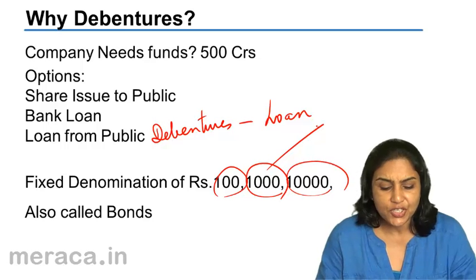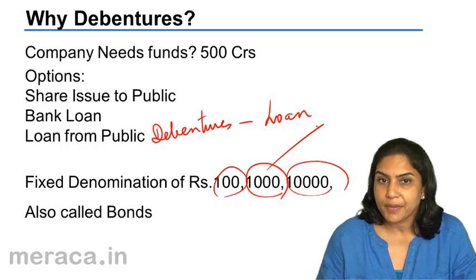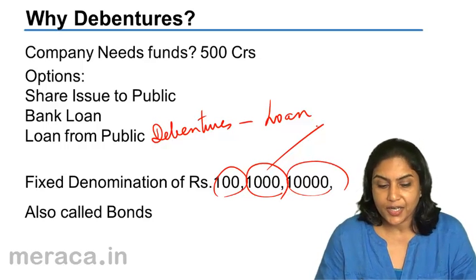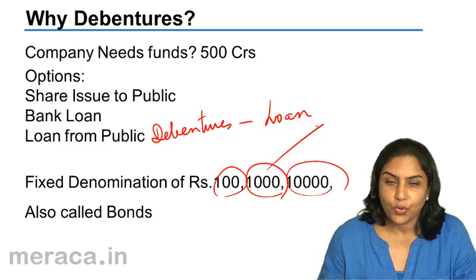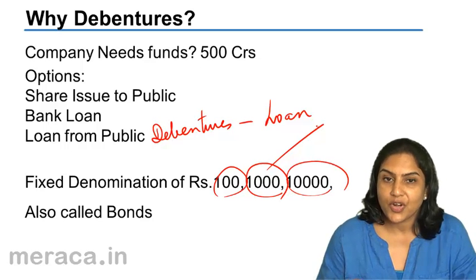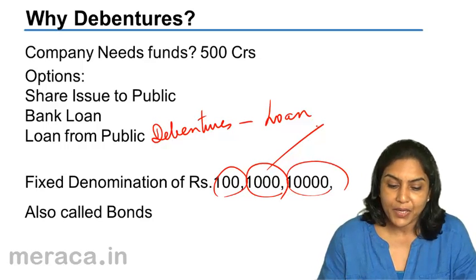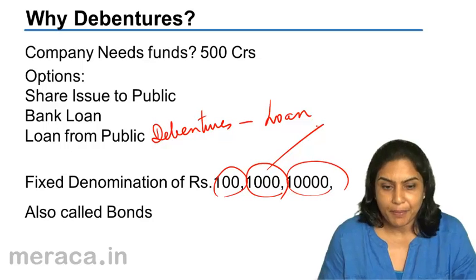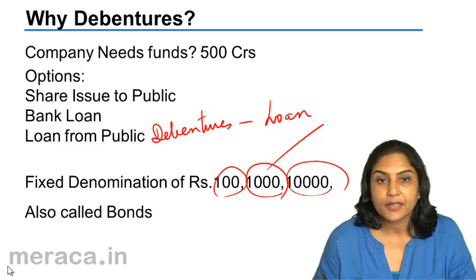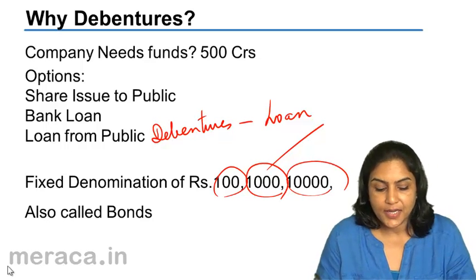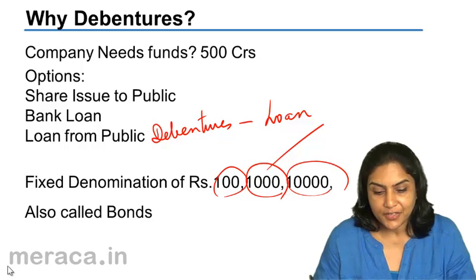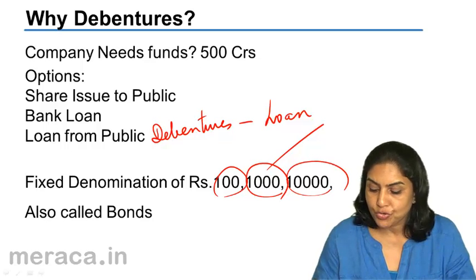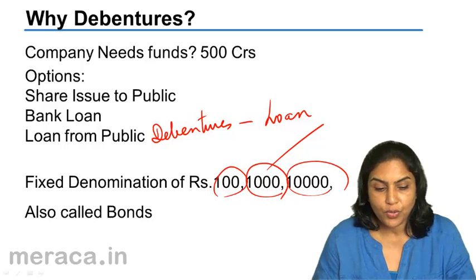Debentures are also called bonds. A debenture is nothing but a loan which is raised by a company from the general public. Thus, a company may find it convenient to raise loan in the form of debentures.